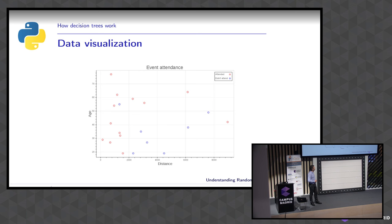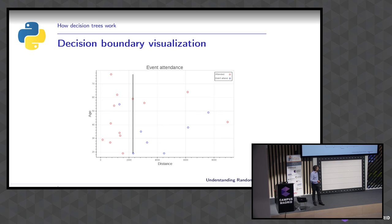For each variable independently, the decision tree finds a good splitting point — one that tries to put all samples of one class on one side and the other class on the other side. The best split gives two pure splits, where we have just one class on each side. The first split clearly separates people living close to the event, who are more likely to attend, from those who live far away.